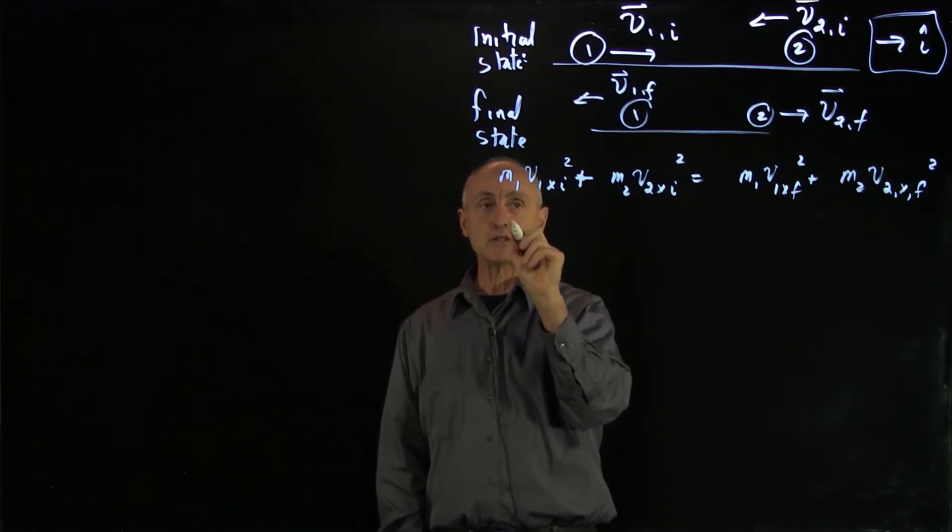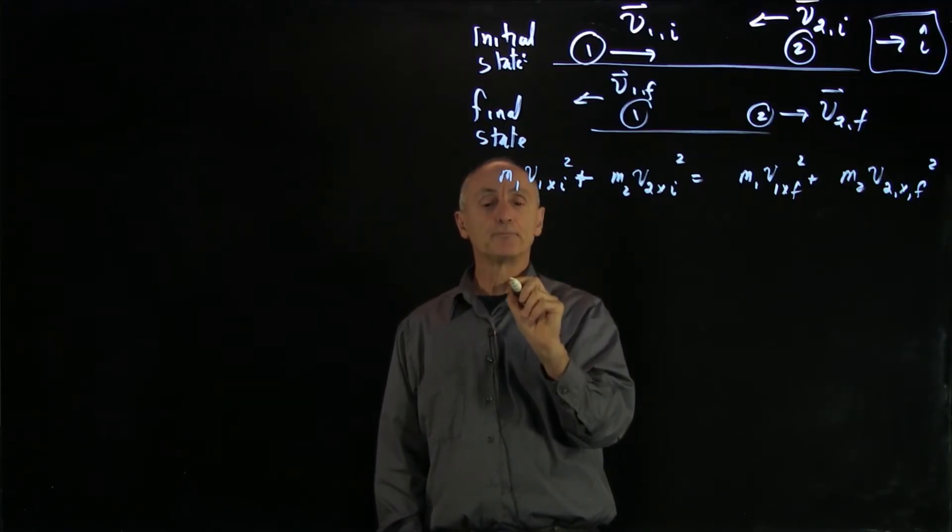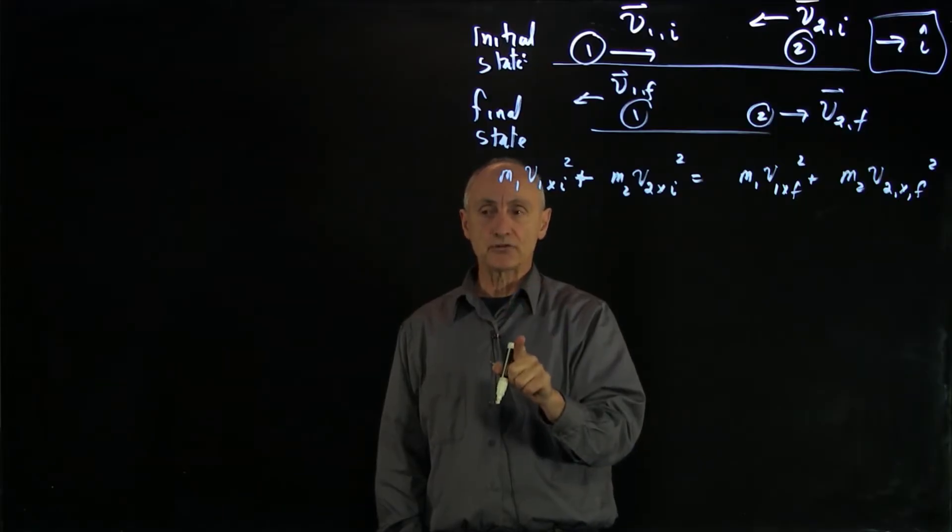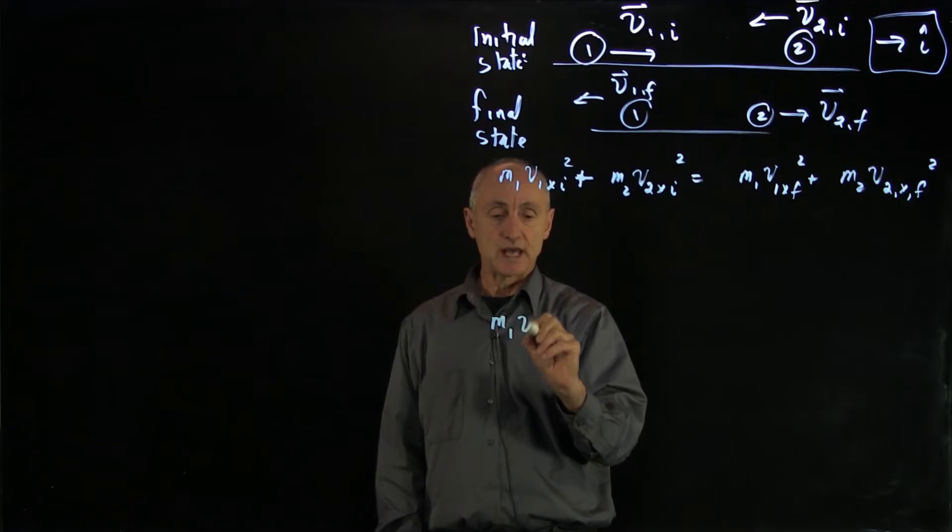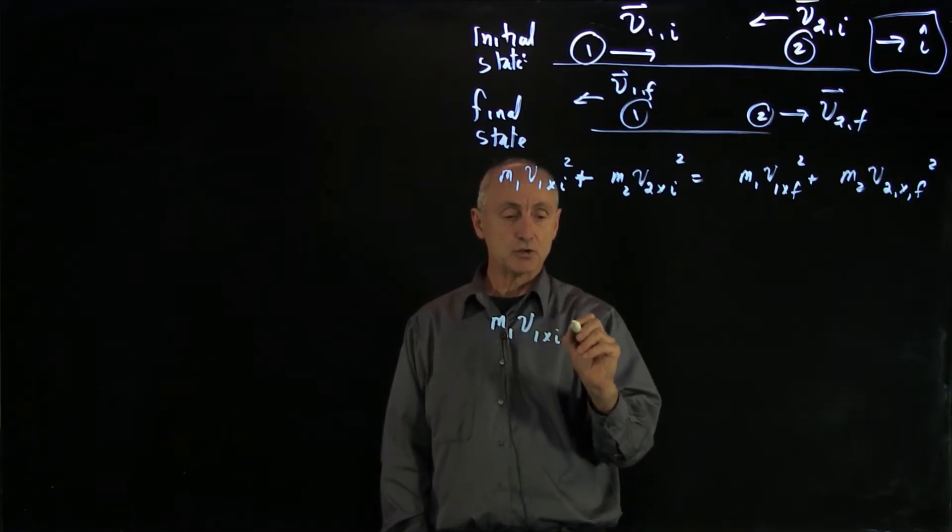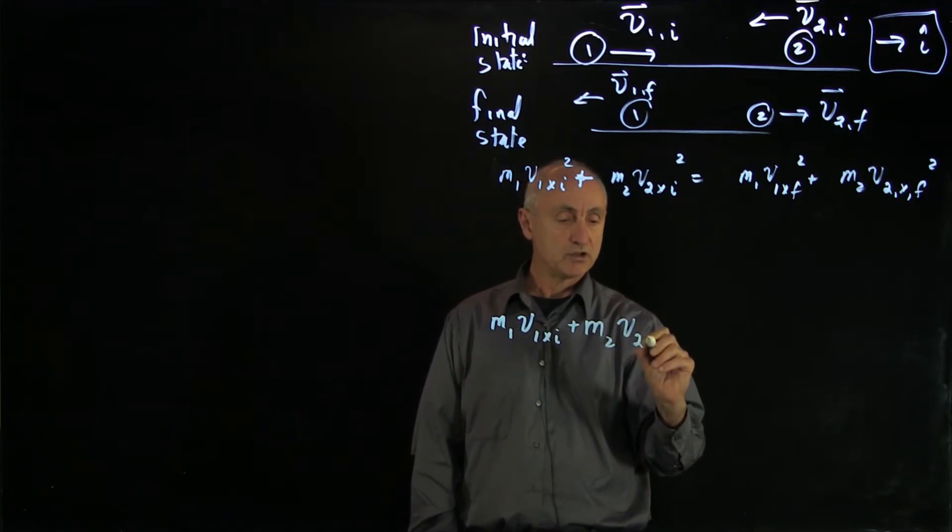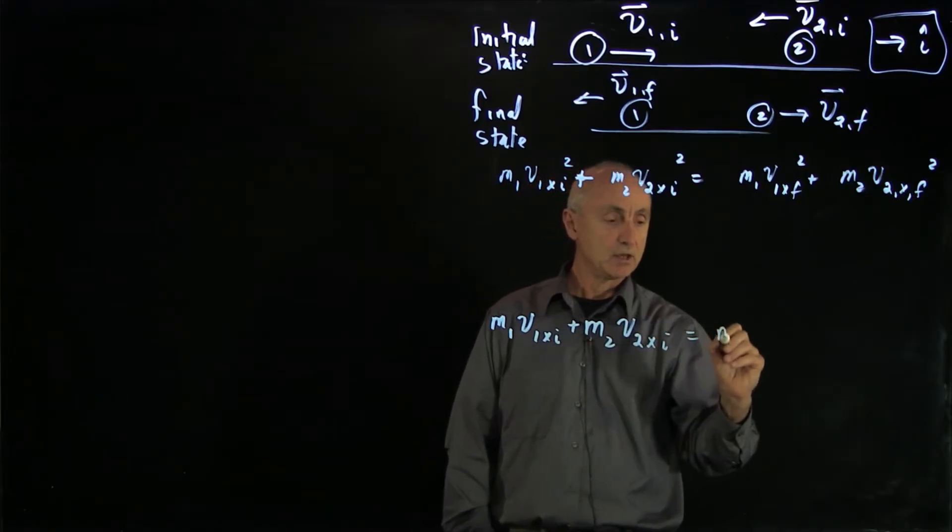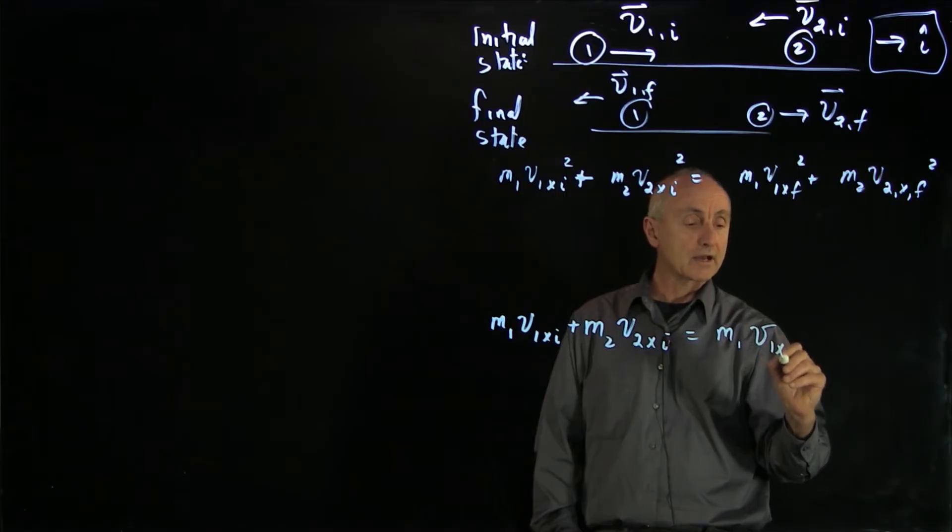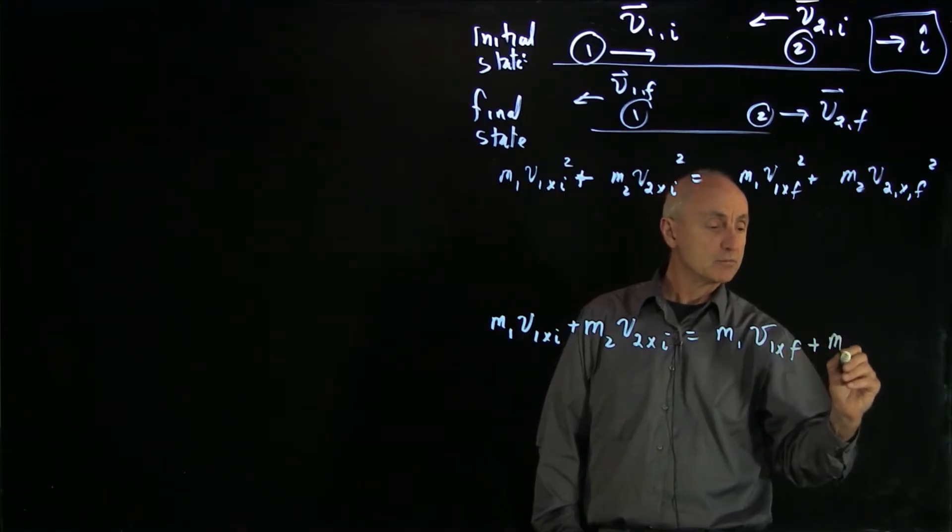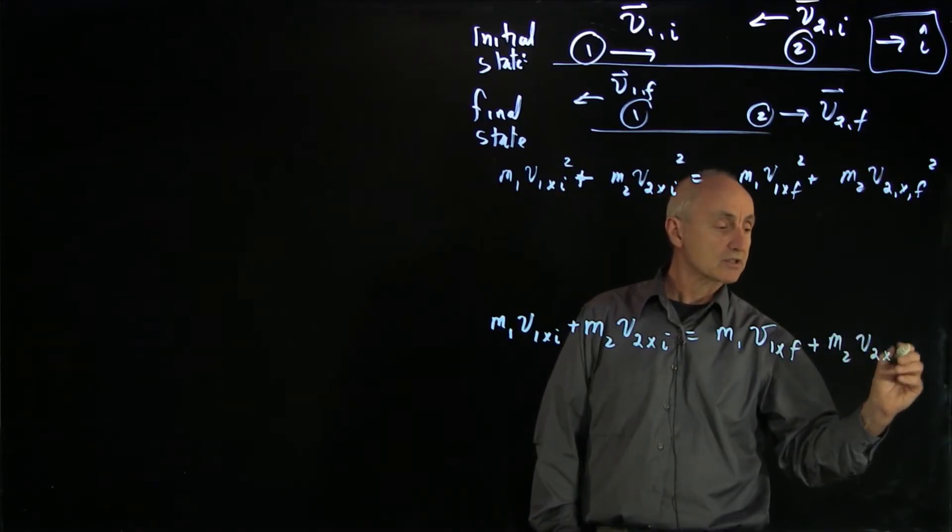And this is our fact that our energy is constant. And now our condition that momentum is constant, we'll write this. I'm going to leave a little space here intentionally. And our condition that momentum is constant is m1 v1x initial plus m2 v2x initial equals m1 v1x final plus m2 v2x final.